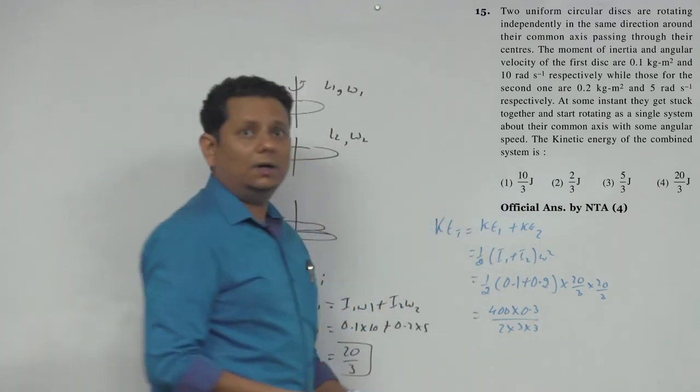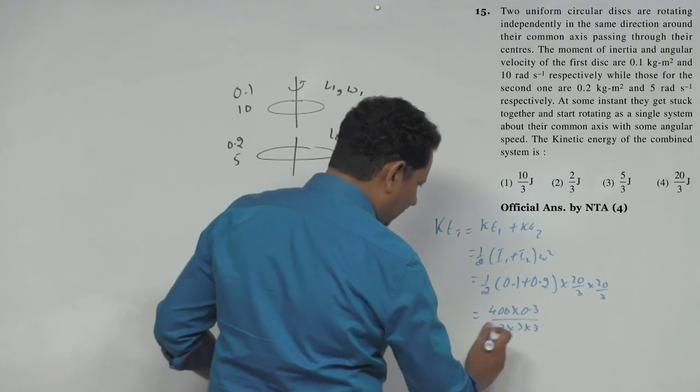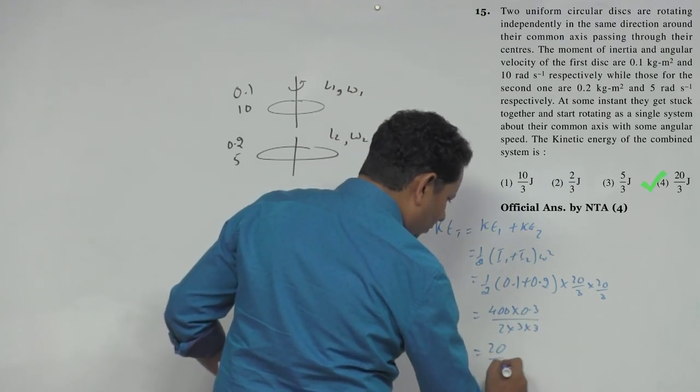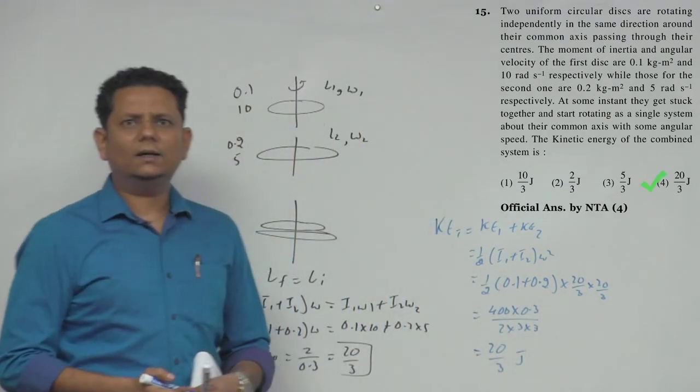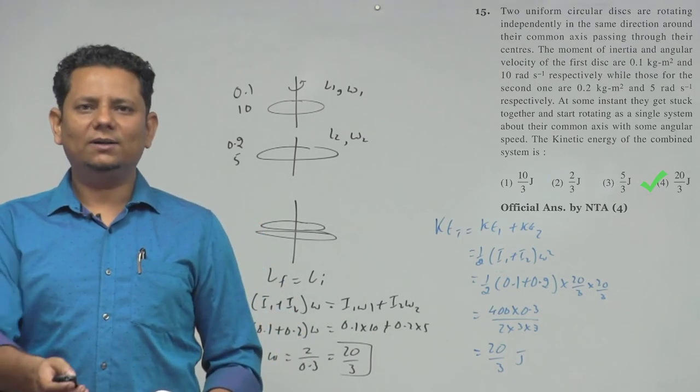Solving this, we get 20 by 3 joules. So based on this, option number 4, 20 by 3 joules, would be the right answer.